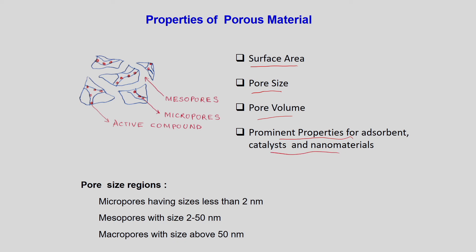Other prominent properties — beyond surface area, pore size, and pore volume — may include what different sites exist within that particular surface. These are important but not covered in physisorption; they will be more relevant when we cover chemisorption. Surface area, pore size, and pore volume each have their own individual relevance.